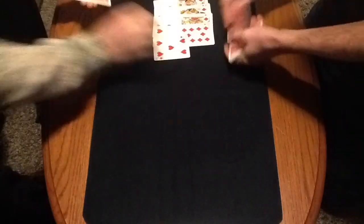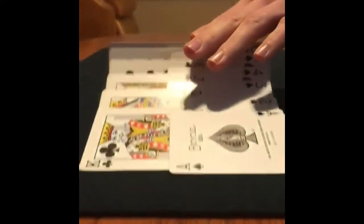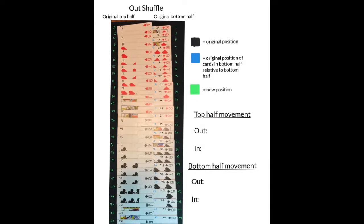Here we will manually perform an out shuffle on a deck of fifty-two cards. Before beginning the shuffle, the cards are in new deck order. Since we are doing an out shuffle, we start with the top card of the top half and alternate between halves. Here is the end result of this perfect out shuffle. In this picture, the original position of the card is labeled in black. In blue, we mark the original position of the cards in the bottom half relative to the bottom half. For example, the bottom half starts with card number twenty-six, but since it is now the top of the bottom half, in blue it is labeled zero. In green, on the sides, we labeled the new positions of the cards. If you look closely, you'll see that the card's movement behaves slightly different depending on whether it originally came from the top half or bottom half.